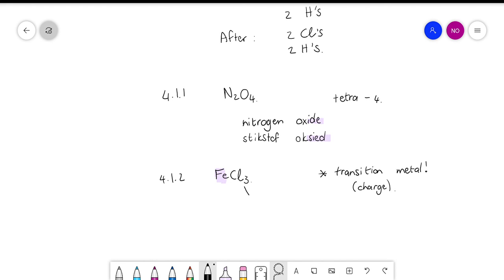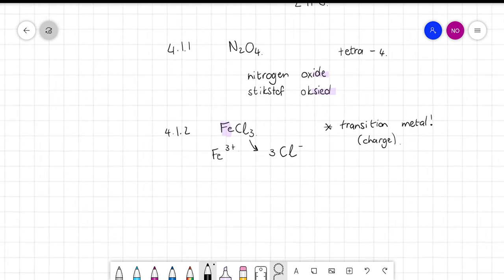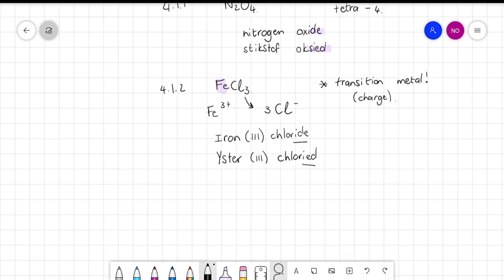Okay, so for that we're first going to look at this one. And we're going to say, we have three chlorine one minus ions. So in other words, to balance that out, this one had to have a positive three charge. So if we write that down, it means that it'll be iron in brackets three. And look here at the end. So in Afrikaans it's eister drie.